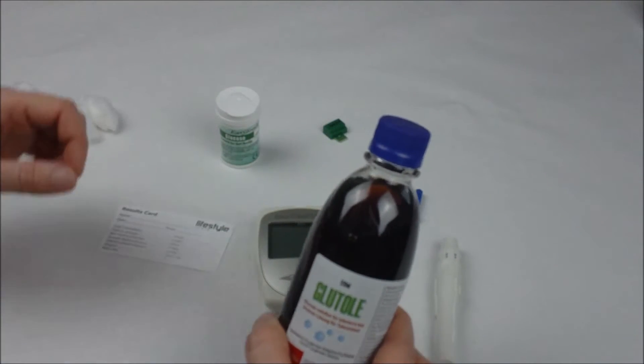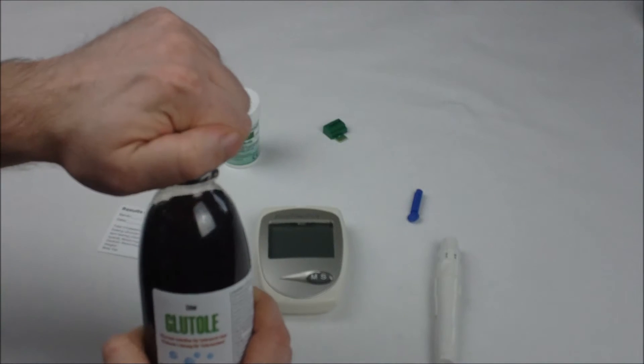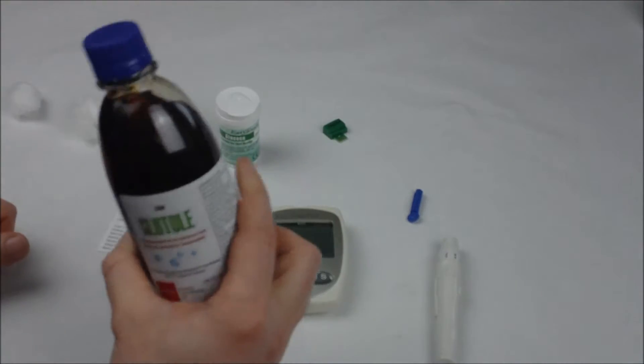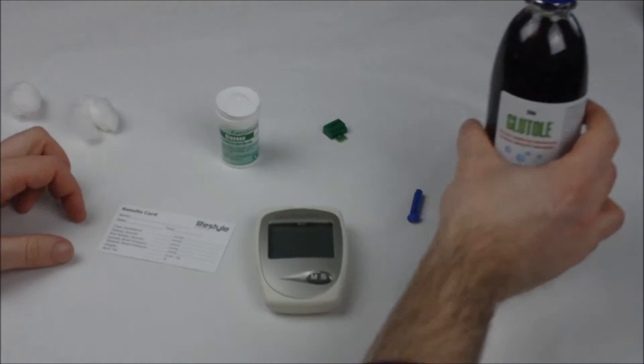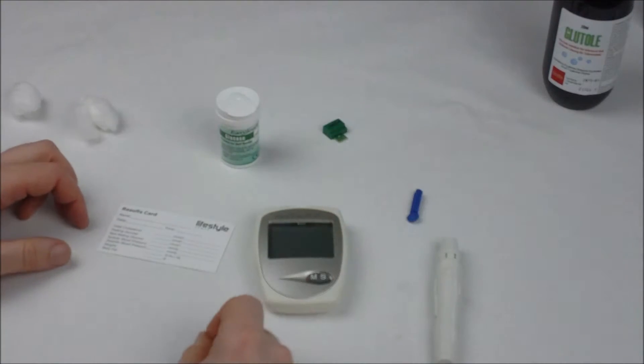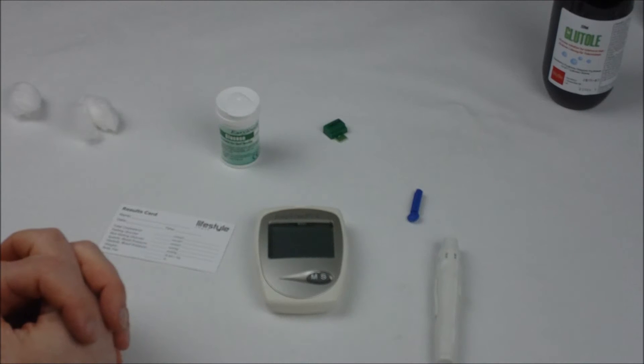So once you've done that simply uncap the bottle and drink it. Try and drink it within about a five minute period. After that five minutes or after you've finished your drink you then want to set a timer for two hours. This allows your body enough time to process the glucose and absorb it into your body.